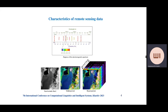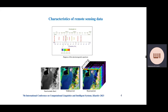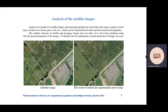Modern satellites are able to provide high resolution imagery. The data are captured in a wide range of the electromagnetic spectrum, and the presence of infrared and near-infrared bands makes it possible to assess the state and stages of harvest, to determine the type of vegetation, and to distinguish vegetation from other objects in the image. Each image contains several types of land cover, which can be characterized by their spectral and textural properties.